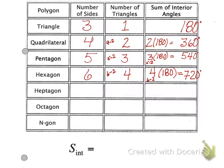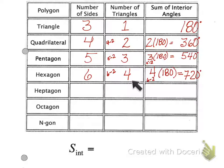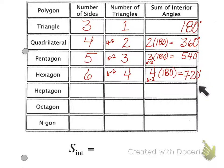Look quickly at what I've written down here. I have the number of sides: three, four, five, six. I have the number of triangles: one, two, three, and four. How do you get these from the number of sides? Subtracting two. Four minus two gives you two. Five sides minus two gives you three triangles. Six sides minus two gives you four triangles. Then two times 180 equals 360; three times 180 equals 540; four times 180 equals 720. Go ahead and pause this — fill out the next two rows and the last one as well.